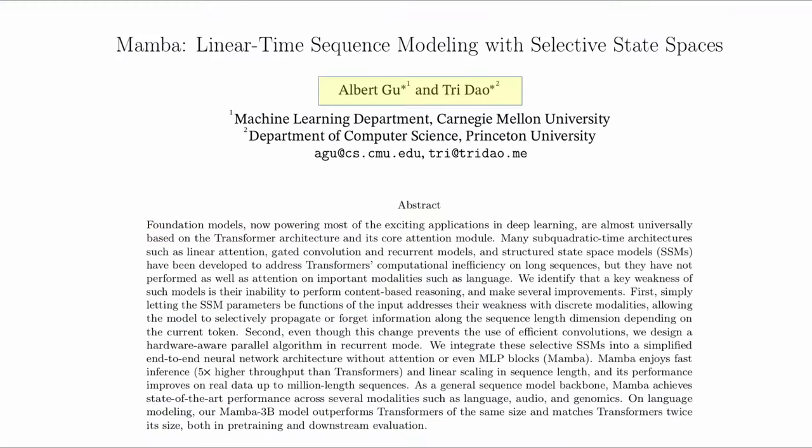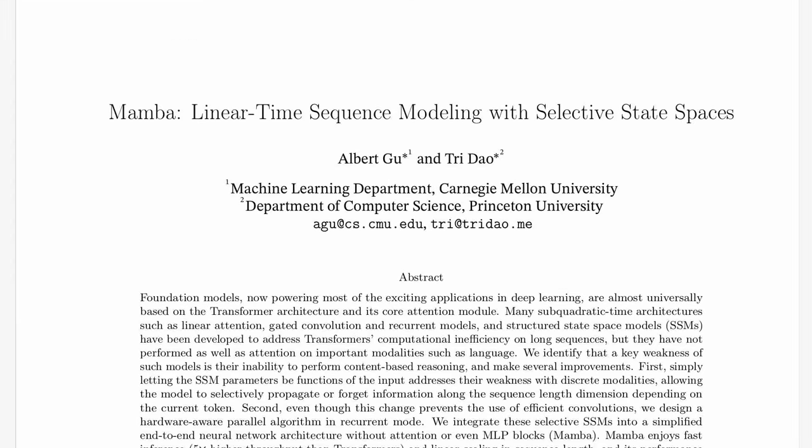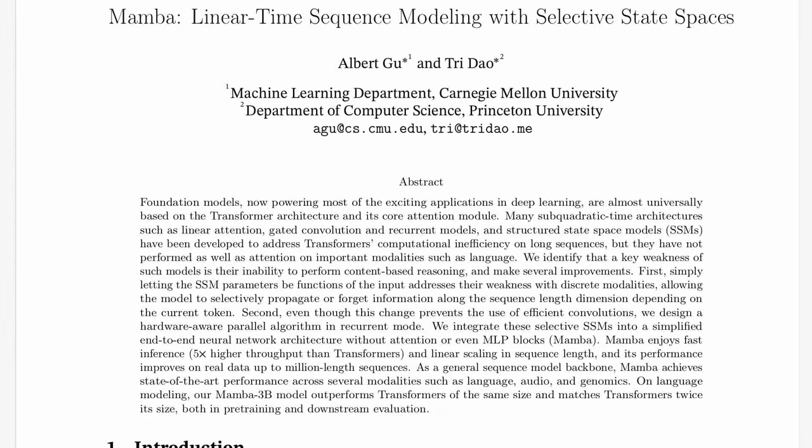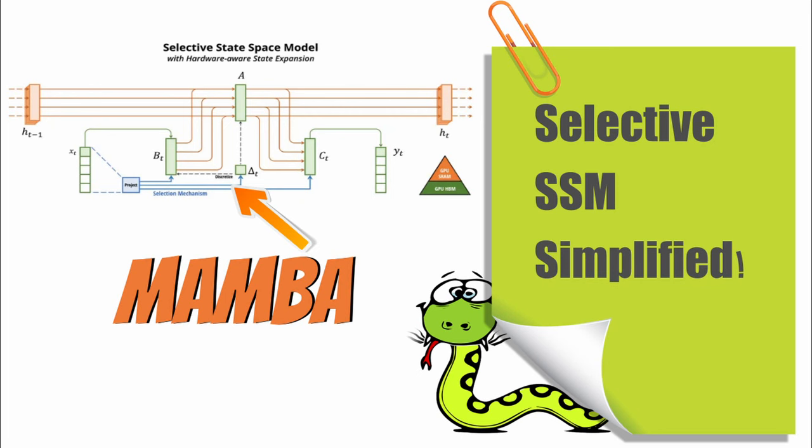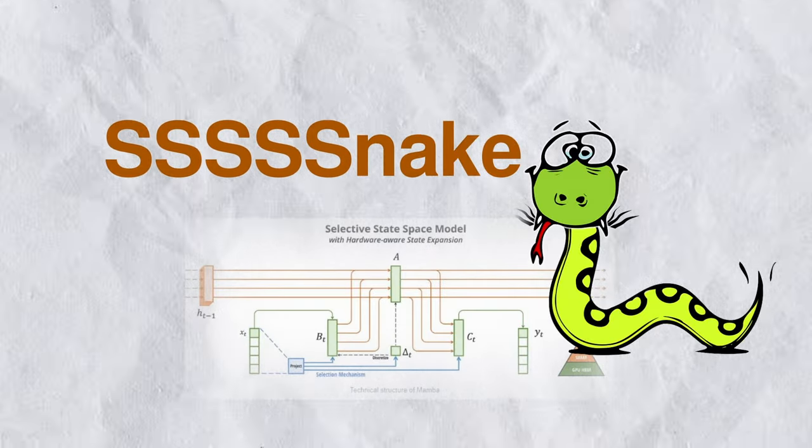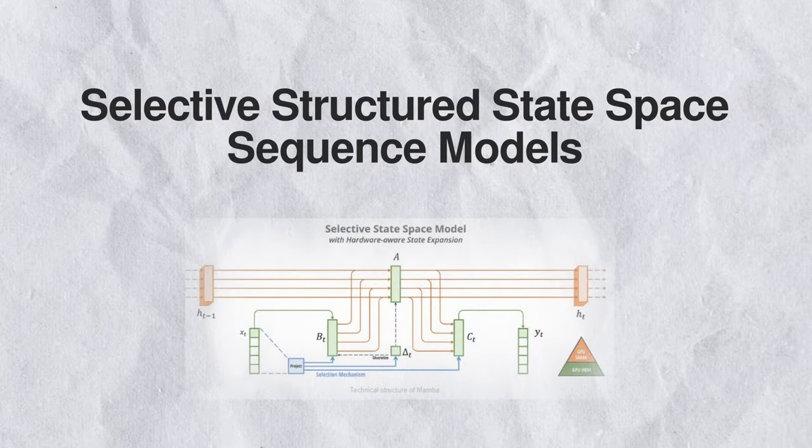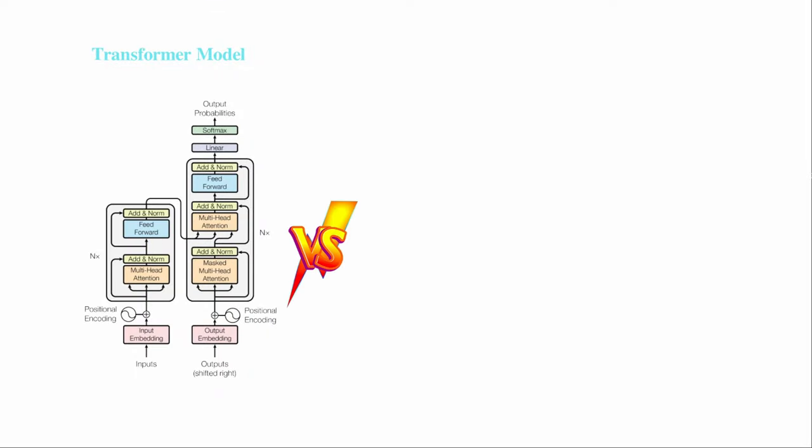was proposed in a published article, Mamba linear time sequence modeling with selective state spaces. I have made a super simplified explanation of Mamba architecture in the previous video, so if you have not watched it, make sure to do so before we jump into more details about the two models' design and performance differences.